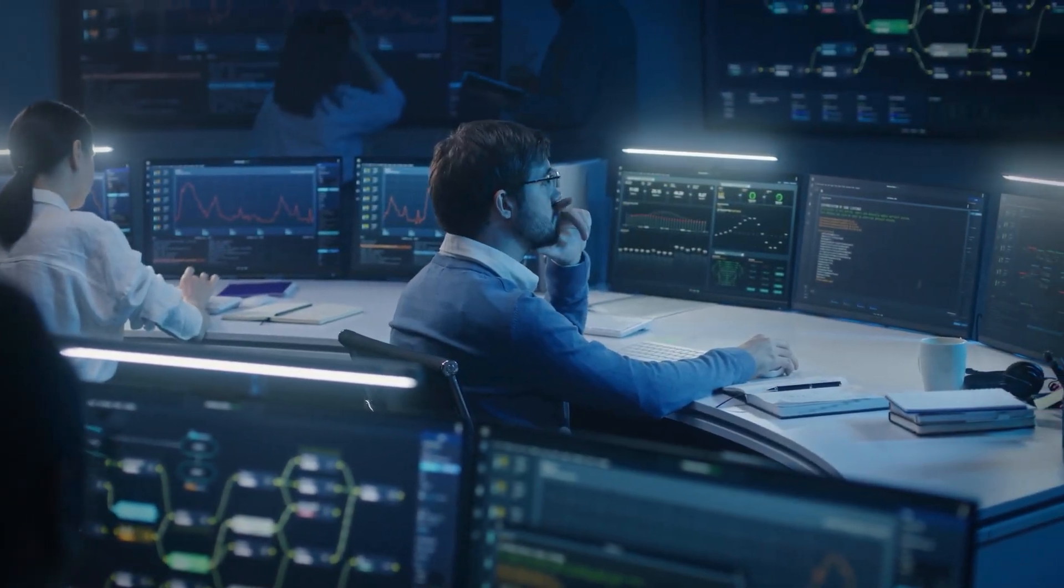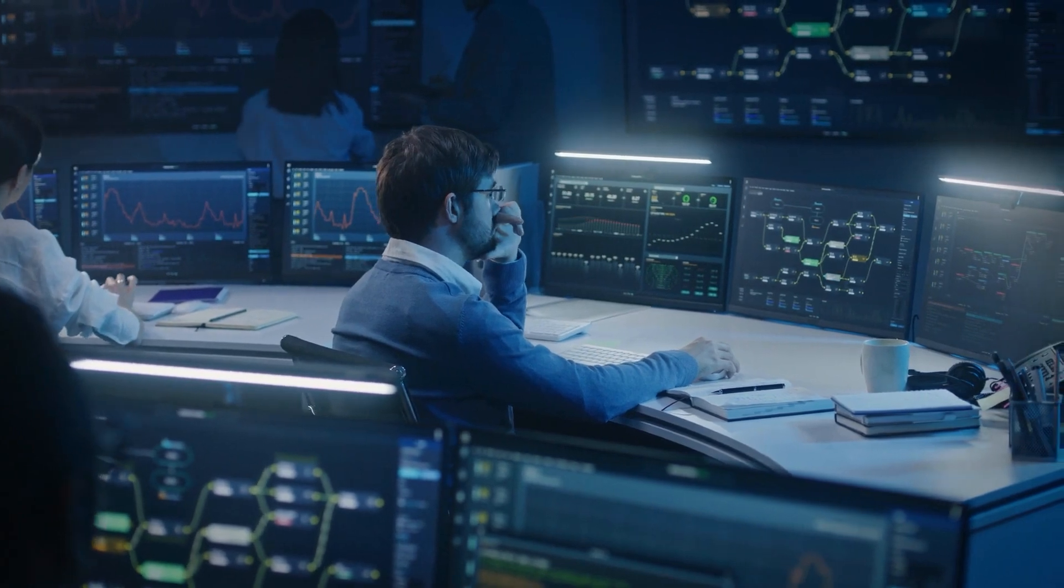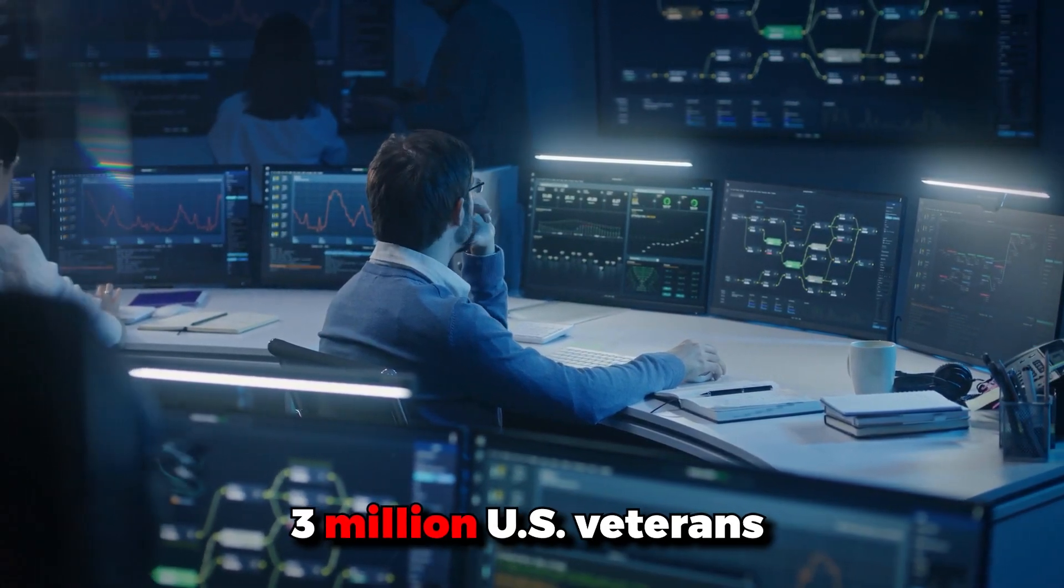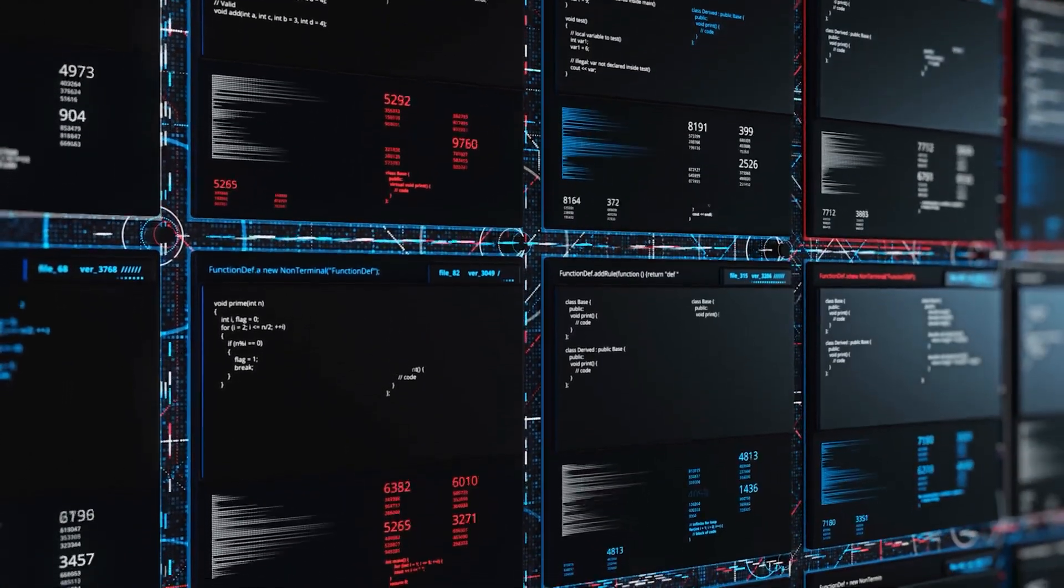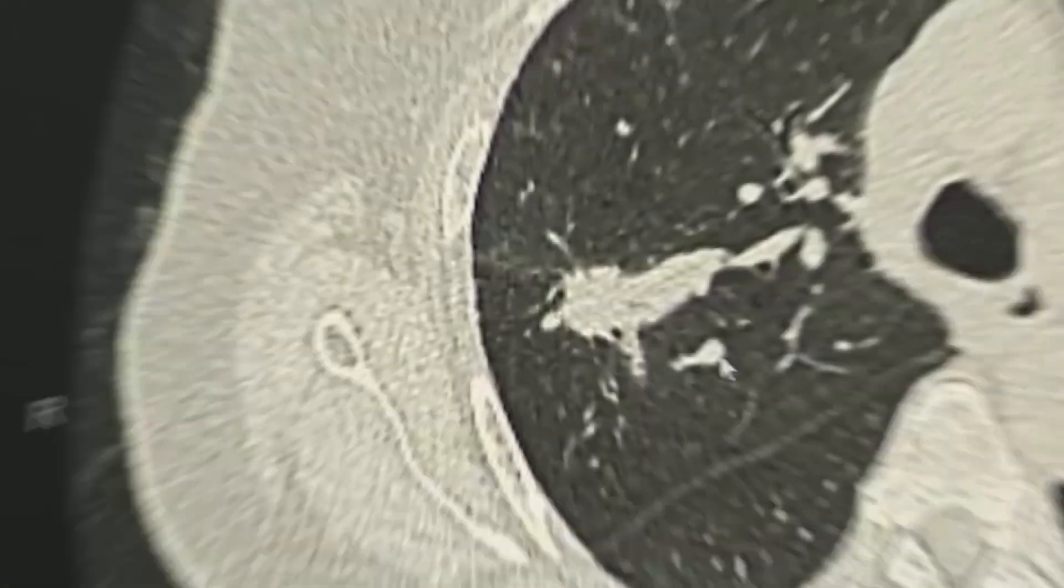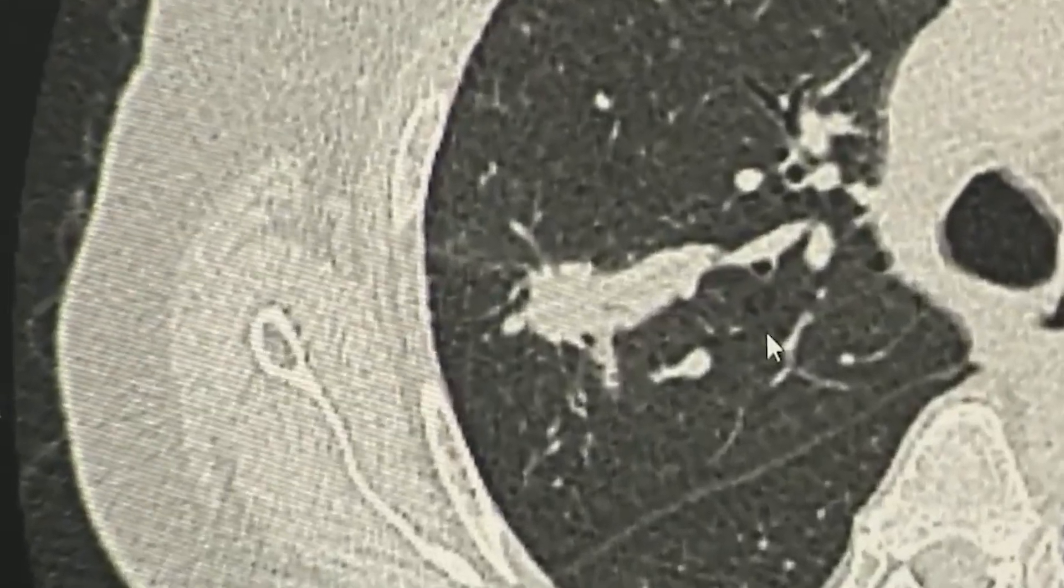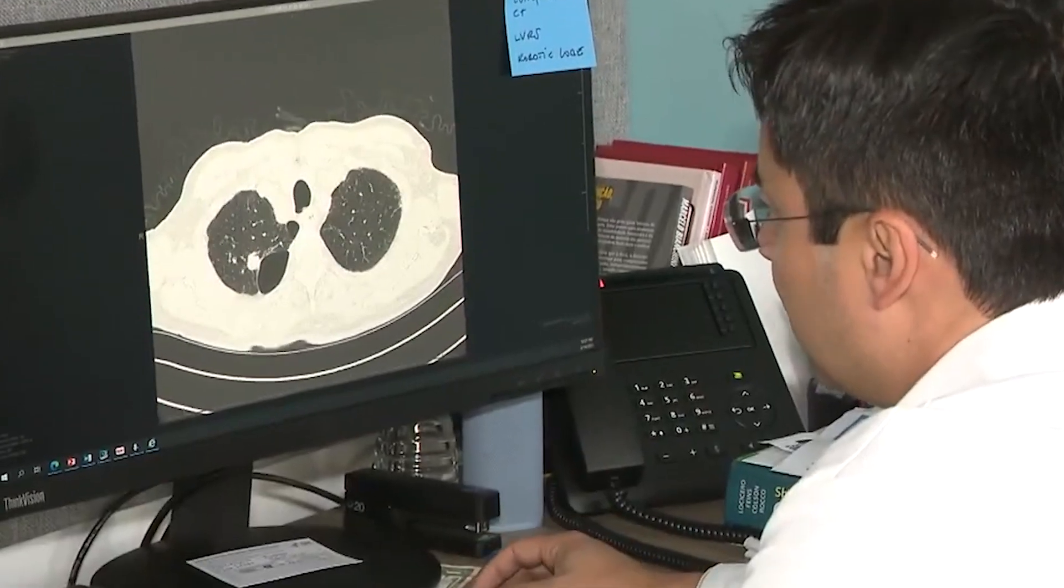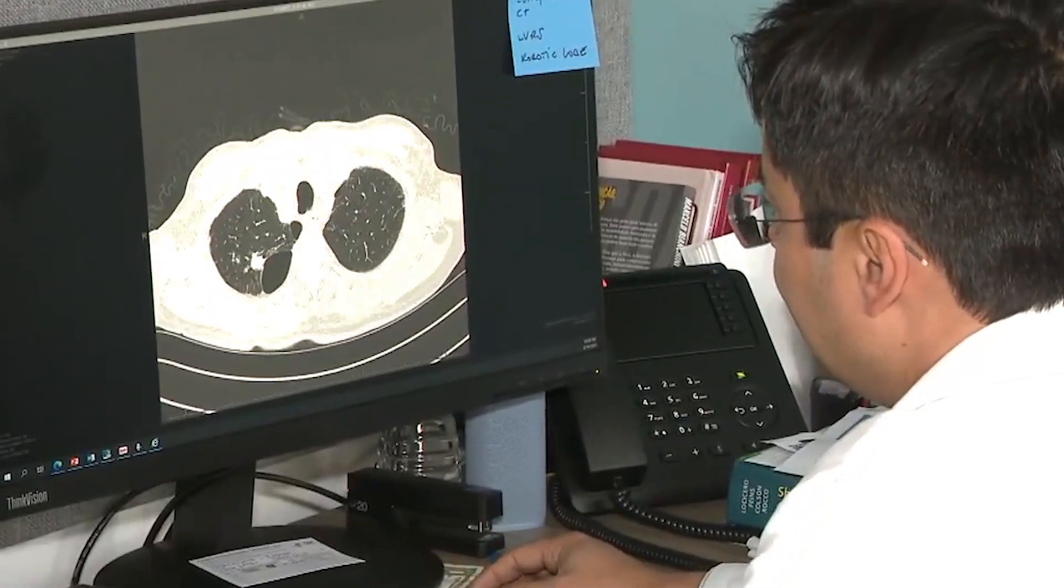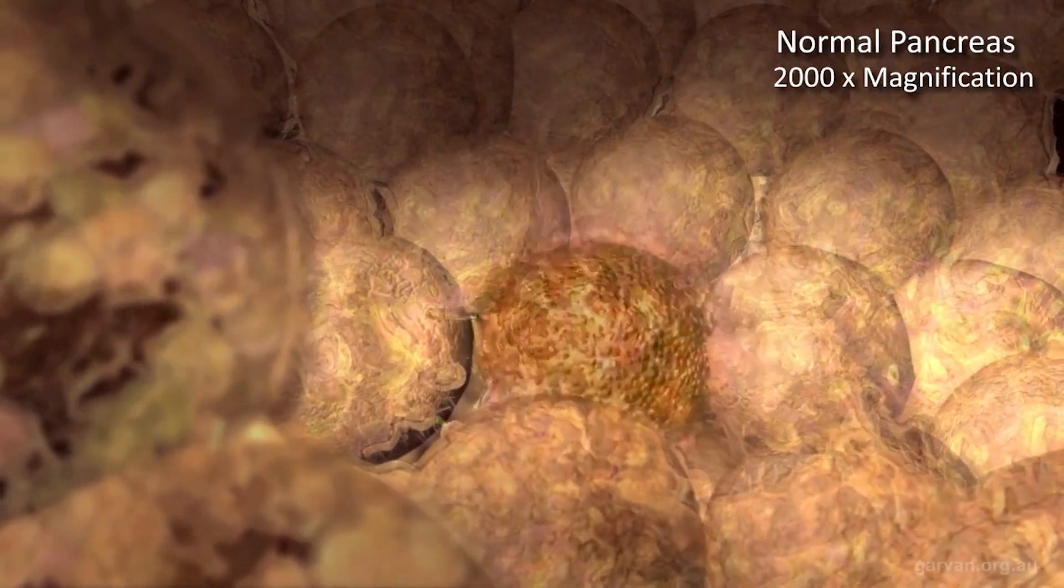The scientists then tested the AI tool by analyzing the records of nearly three million US veterans spanning 21 years. The computer algorithm correctly identified almost 4,000 individuals, up to three years before they were actually diagnosed with pancreatic cancer. The study shows that AI models can be as accurate as genetic testing in predicting the risk of pancreatic cancer.